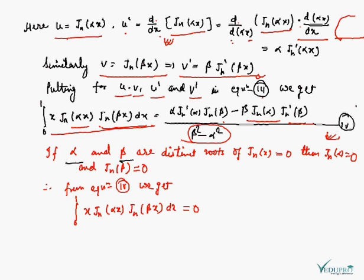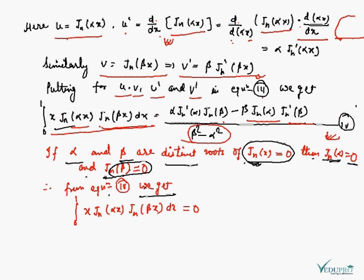Now, if alpha and beta are two distinct roots of J_n(x) = 0, then J_n(α) = 0 and similarly J_n(β) = 0. By substituting these into equation four, since both J_n(α) and J_n(β) are zero, therefore the integration from 0 to 1 of x·J_n(αx)·J_n(βx) dx is equal to 0.